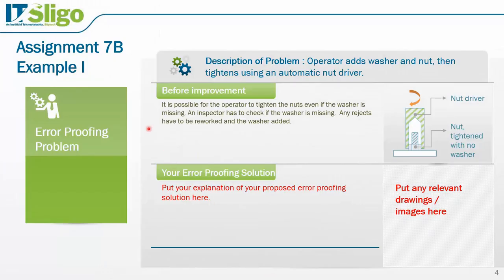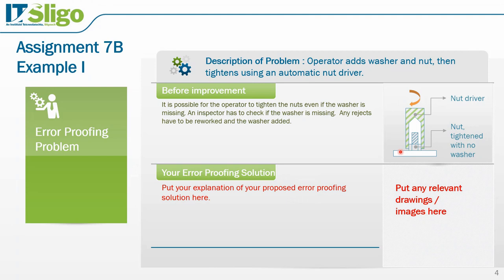Here's an example of a sample problem: the operator adds a washer to the notch and then tightens it using an automatic nut driver clockwise. But sometimes the washer is missing, so the nut gets tightened right down with no washer, and that involves expensive rework. Your challenge is to put in an error proofing solution with any relevant drawings and images.